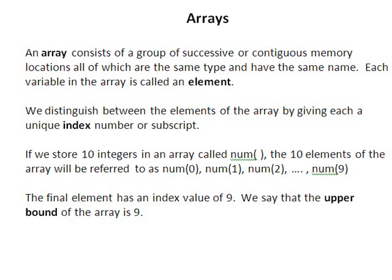The 10 elements in the array num will be referred to as num(0), num(1), num(2) up to num(9). The final element in the array has an index value of 9, and we say then that the upper bound of the array is 9.